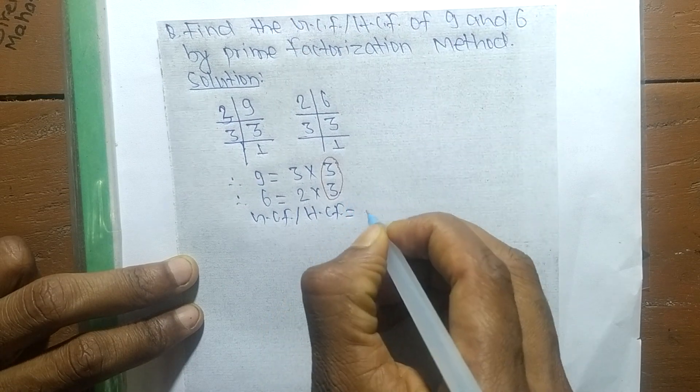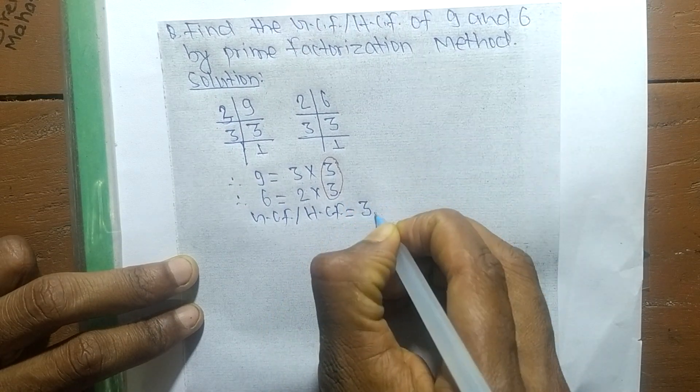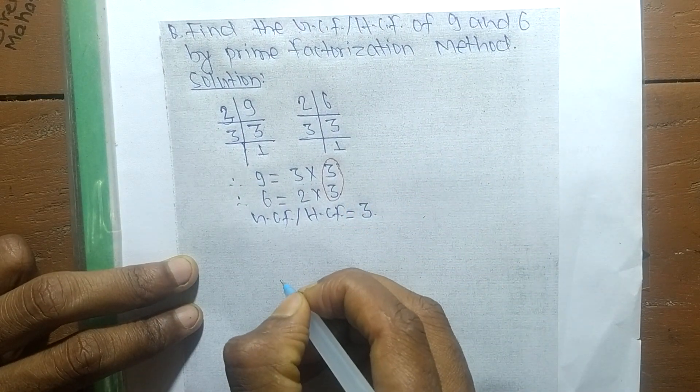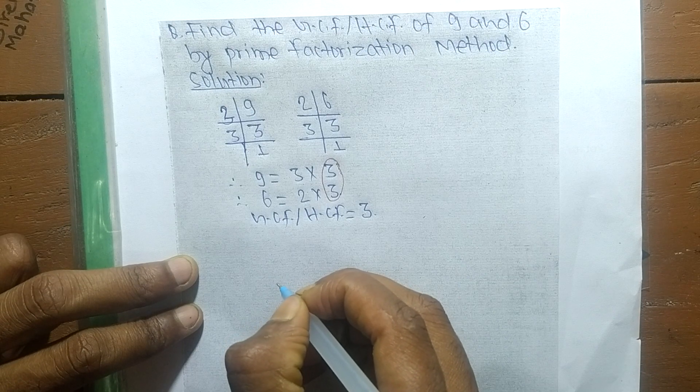So GCF or HCF equals 3. That's all for today, and thanks for watching.